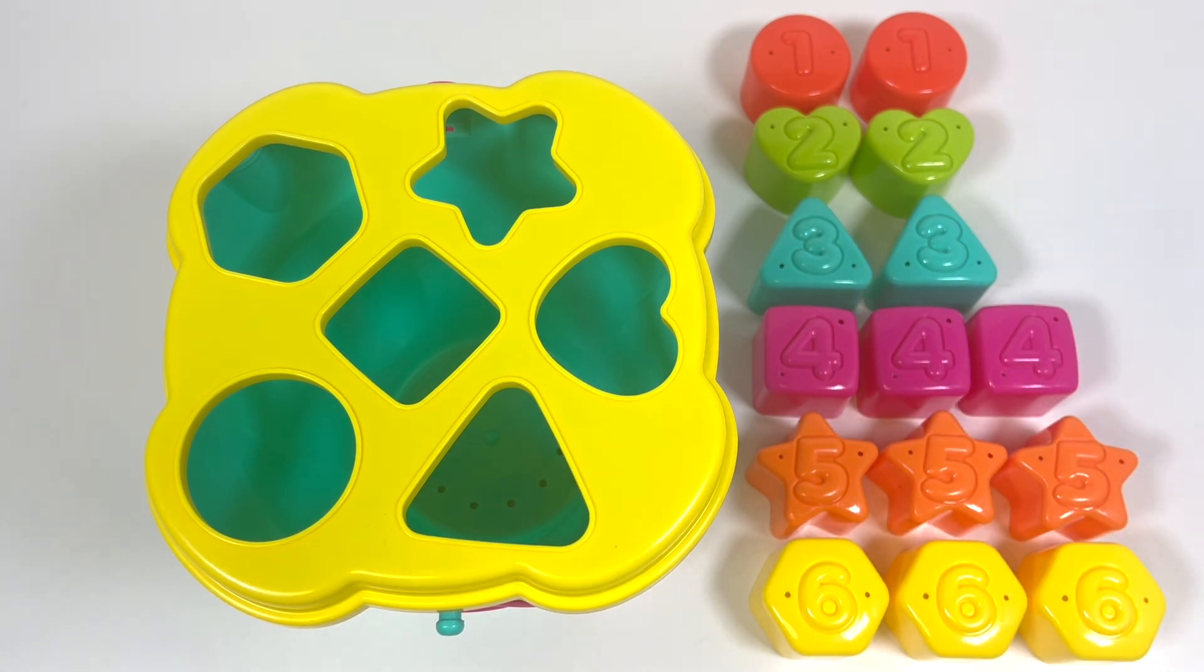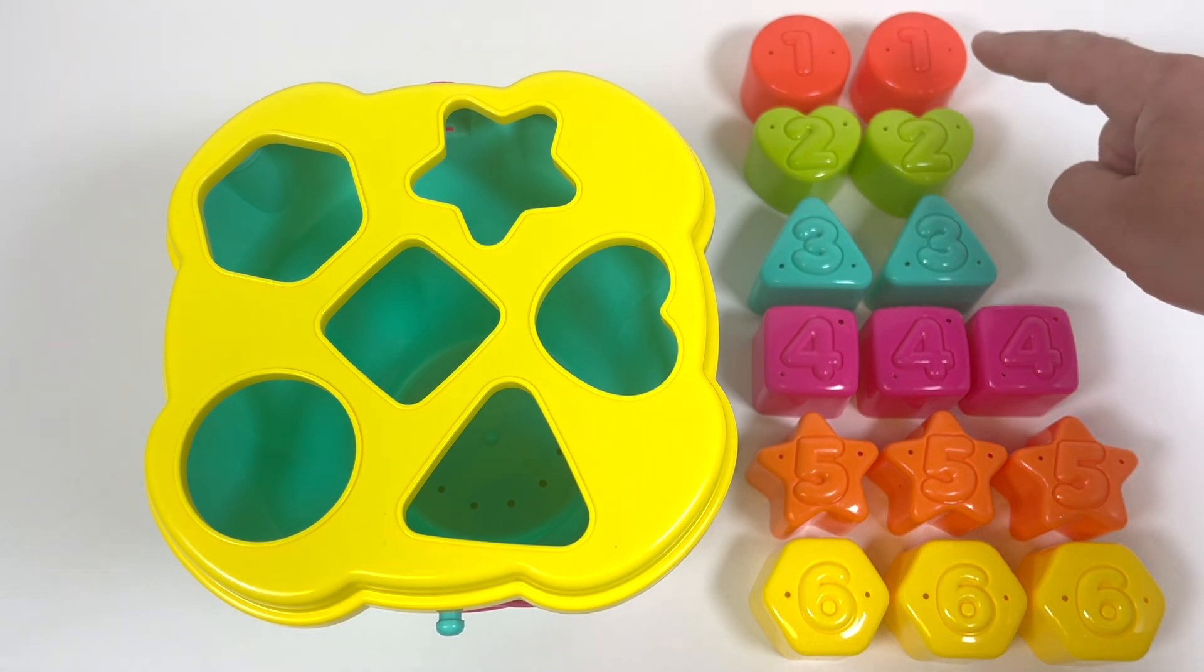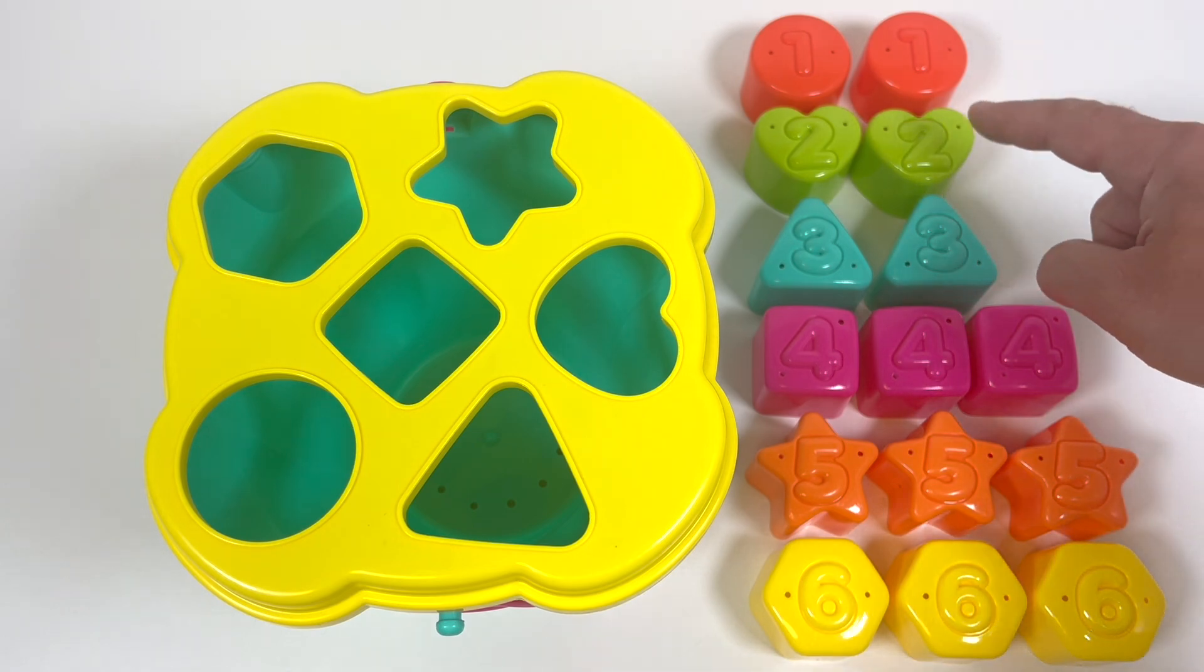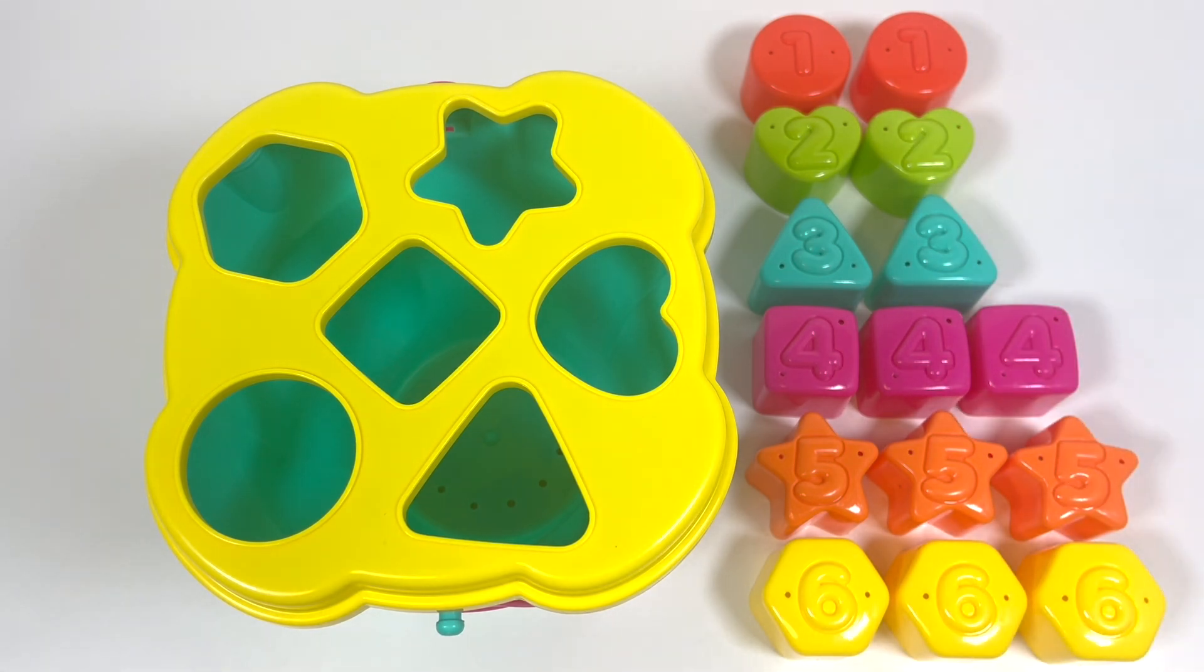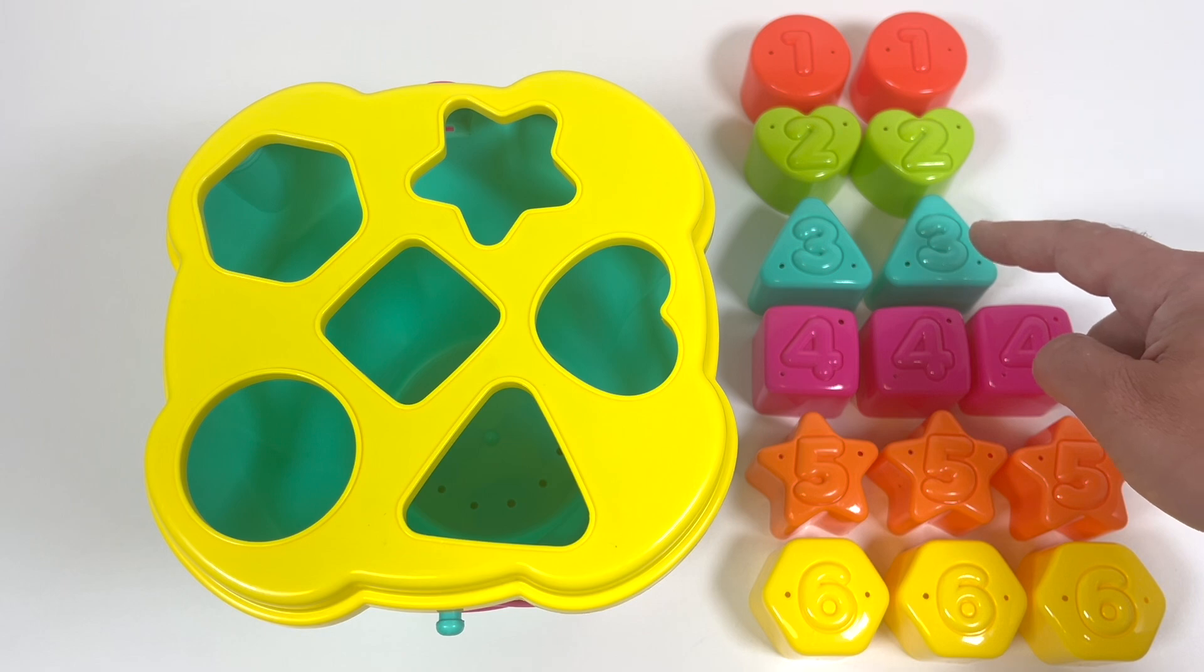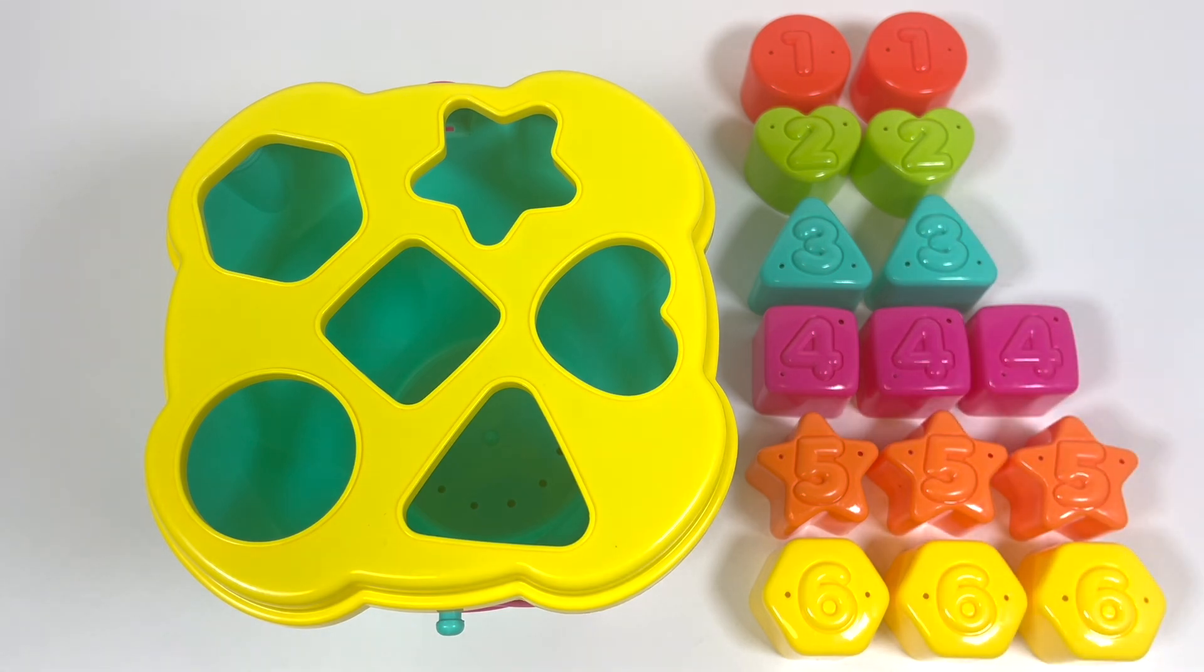we actually have a few of each number. We have 2 red circles, 2 green hearts, 2 blue triangles, 3 pink squares, 3 orange stars, and 3 yellow hexagons.